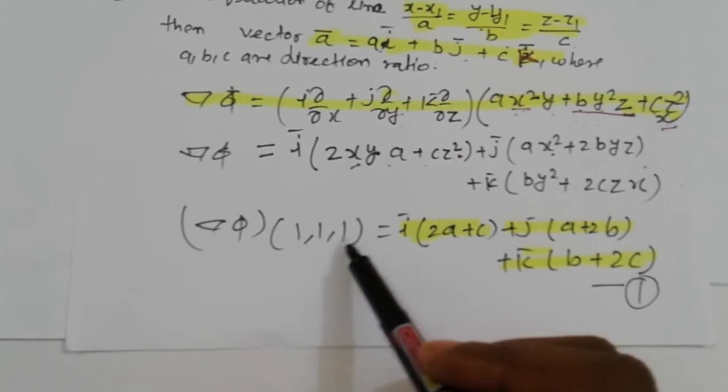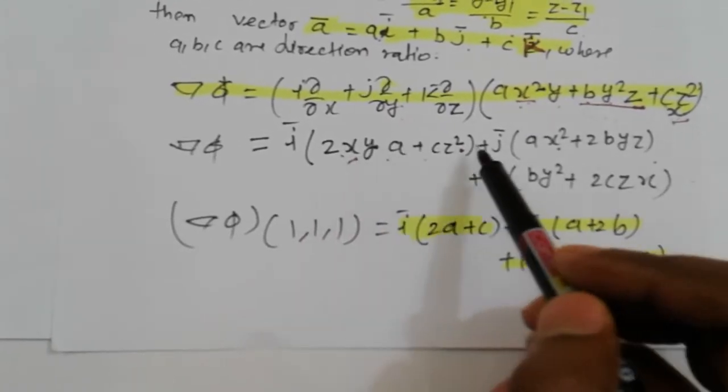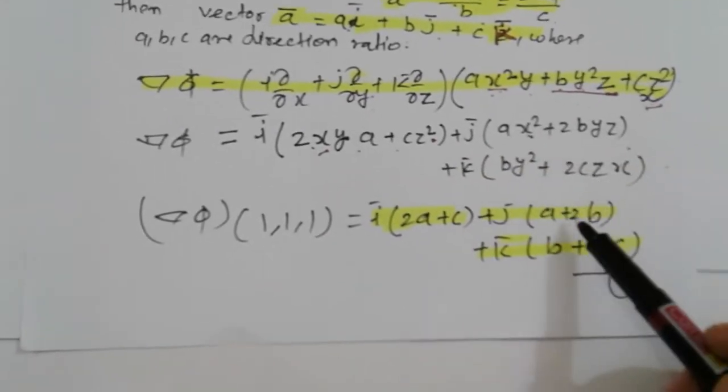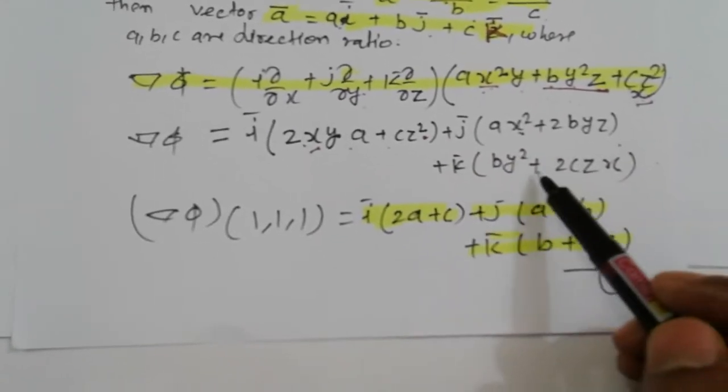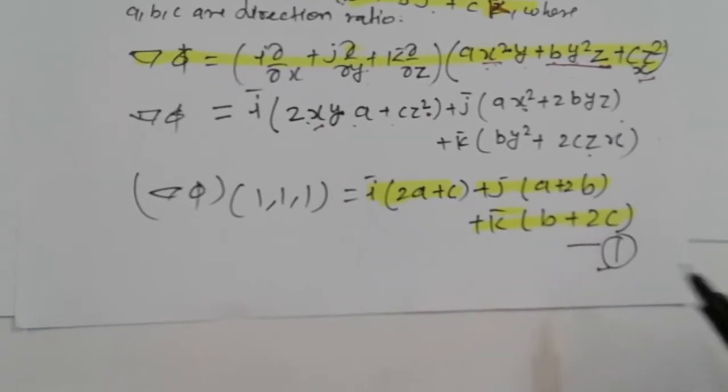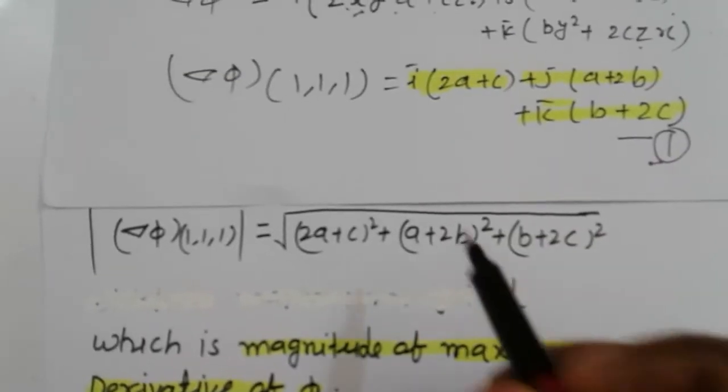Nabla phi at point (1,1,1): putting x=1, y=1, z=1, we get (2a + c)i plus (a + 2b)j plus (b + 2c)k. This is equation number 1.